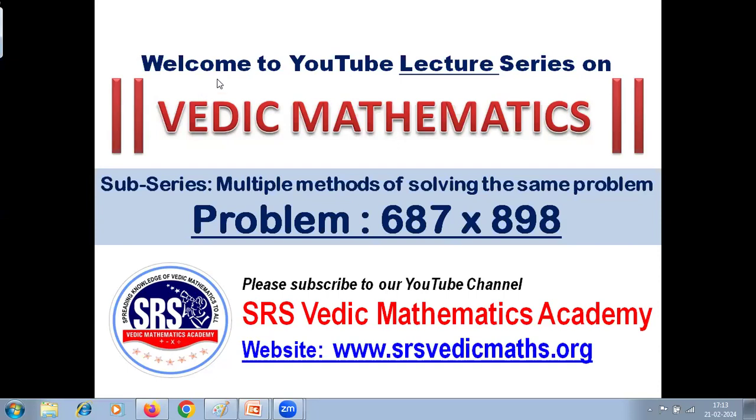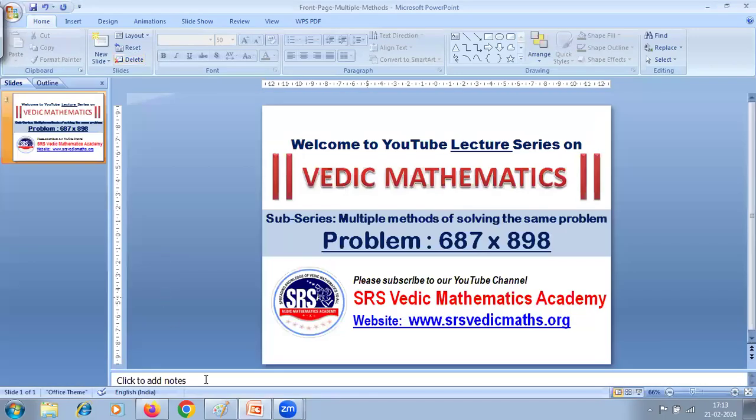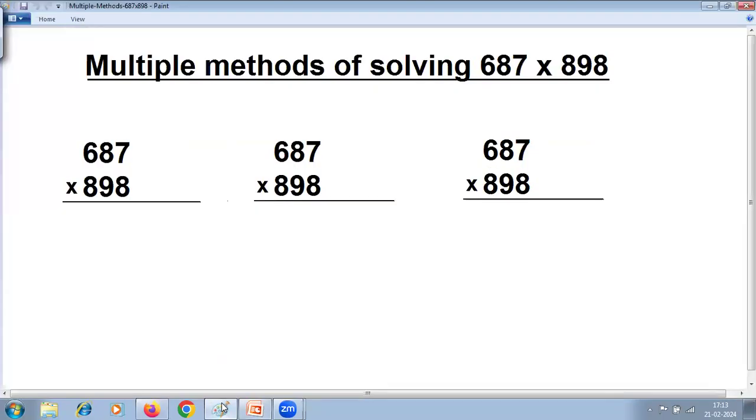Please subscribe to our channel if not subscribed. Multiple methods of solving 687 x 898. This problem is based on Vedic Maths part 2 syllabus. We'll try to solve this problem in three different methods. Please pause at this stage. Try yourself to solve this in three different methods based on Vedic Maths part 2 and then continue with the video.